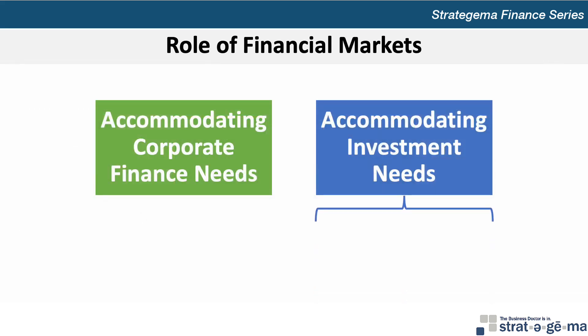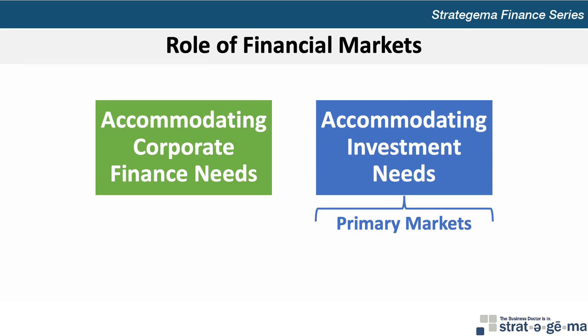The primary markets facilitate the issuance of new securities, allowing corporations to obtain new funds and offer a means by which investors can invest funds. Secondary markets facilitate the trading of existing securities, allowing investors to change their investments by selling securities that they own and buying other securities.